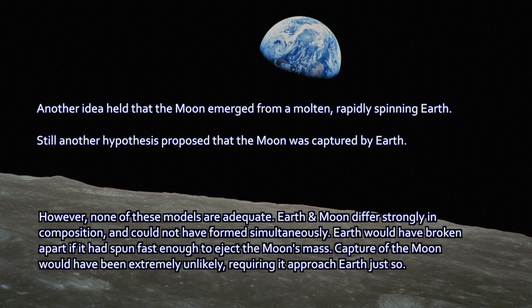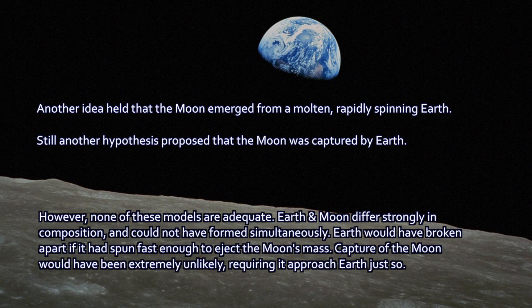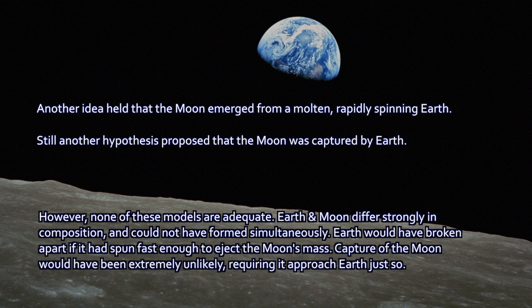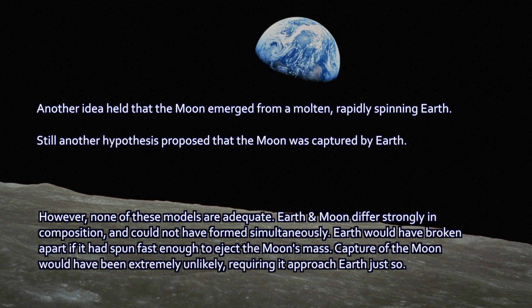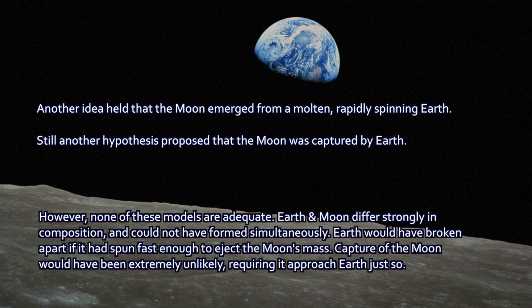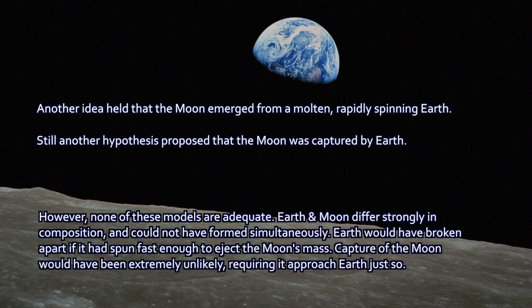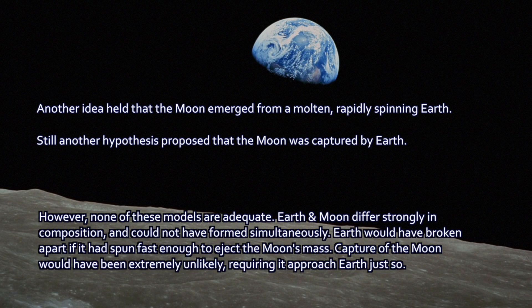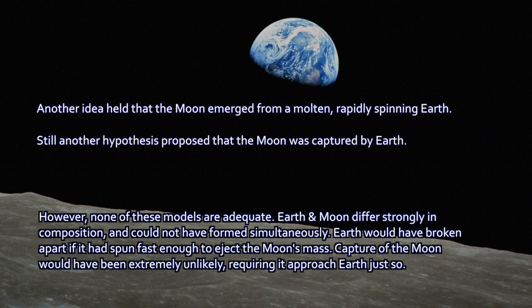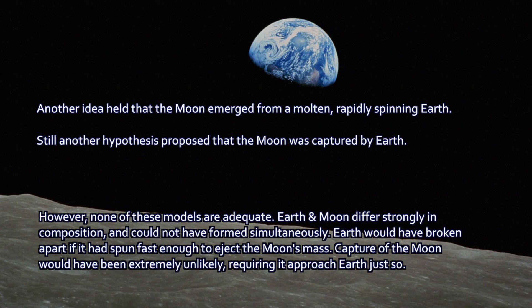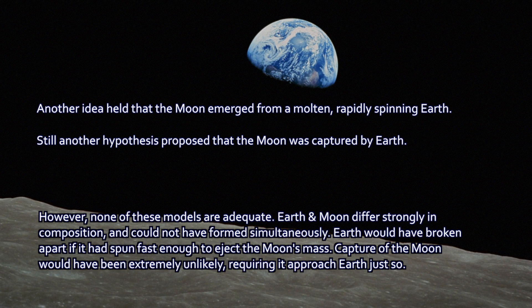Another idea was that perhaps the Moon was captured by Earth. During accretion and just at its last phases, there were lots of stray objects around, and maybe the Moon got captured. It could be compositionally different and still be captured by us. But that doesn't really work, because it's a large Moon — one of the largest moons relative to planet mass in our system. It's not easy to capture. People have looked at this and found it requires a very narrow keyhole: the Moon would have to approach at just the right angle, just the right speed. That's asking for a lot.